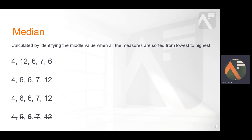Another measure of central tendency is the median. This is the middle value of an ordered list. When there are even numbers of measures, the median is the average of the two middle values.